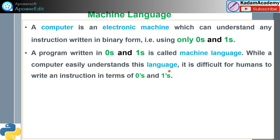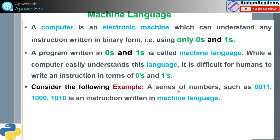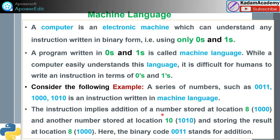It is easy to understand for a computer but difficult for humans to write instructions in terms of zeros and ones. For example, a series of numbers such as '0011,' '10000,' or '1010' are instructions written in machine language. The actual meaning of this is: the instruction implies addition of a number stored at location 8 (represented as 1000 in binary) and another number stored at location 10.